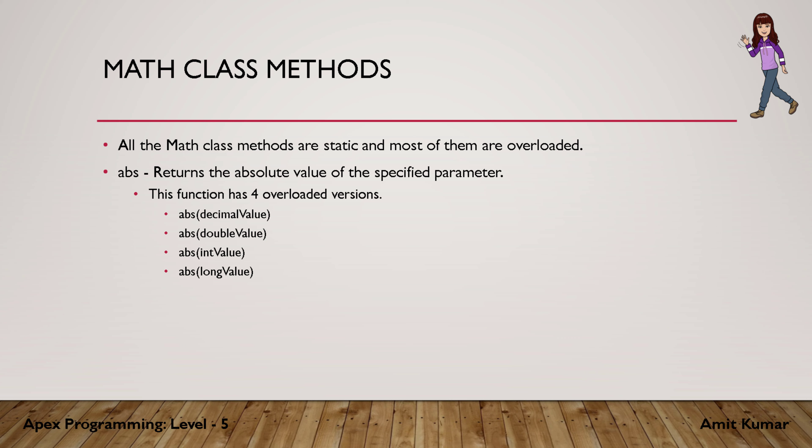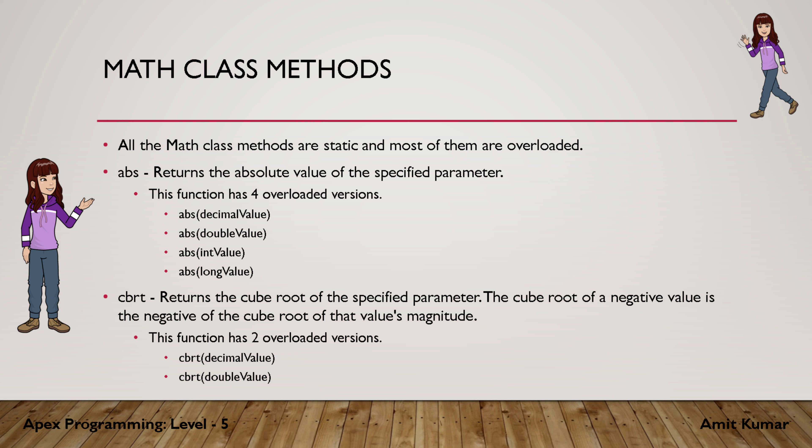cbrt, or cube root, returns the cube root of the specified parameter. The cube root of a negative value is the negative of the cube root of the value's magnitude. So if you are trying to get the cube root of 125 you get 5, and similarly the cube root of minus 125 gives minus 5. It has two overloaded versions where we can pass a decimal or double value.